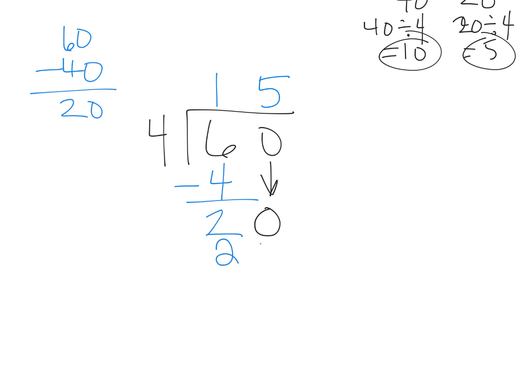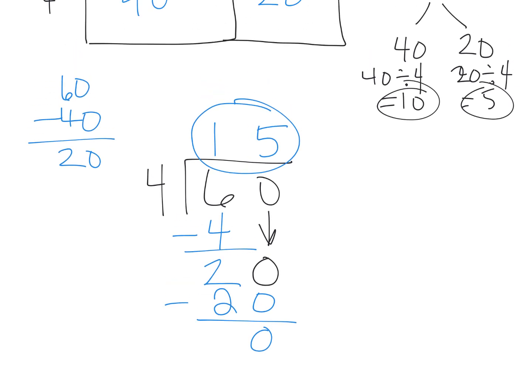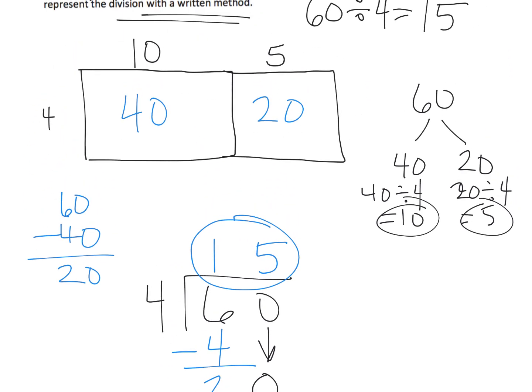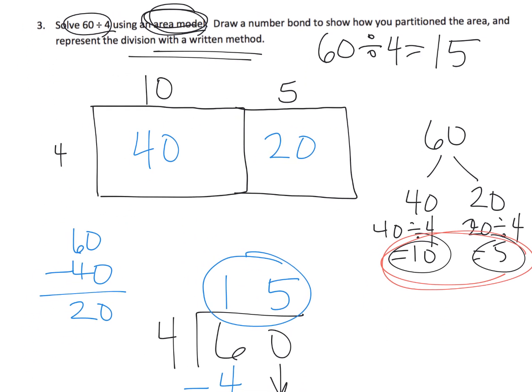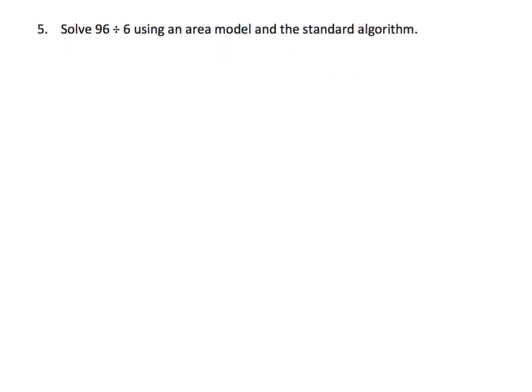And 20 ones divided amongst 4 groups gives us 5 in each group. That means we're going to use up all 20 dots, and our remainder is 0. So once again, here our answer is 15. Here we can see our answer is 15. And way up at the top, we see that our answer is 15.